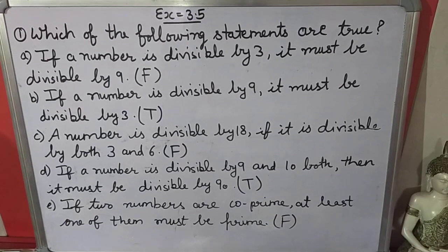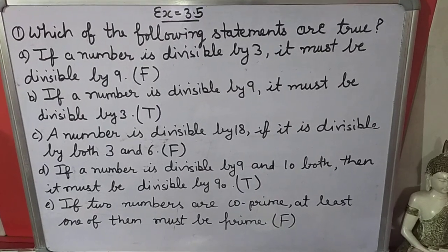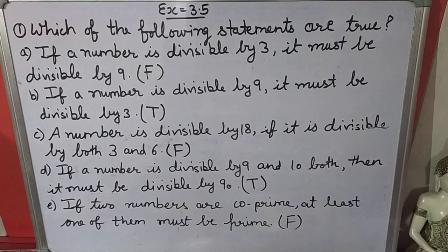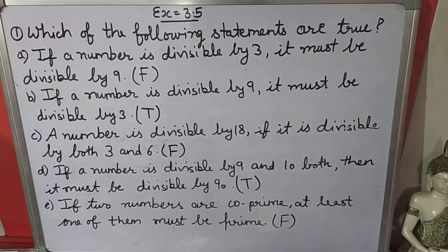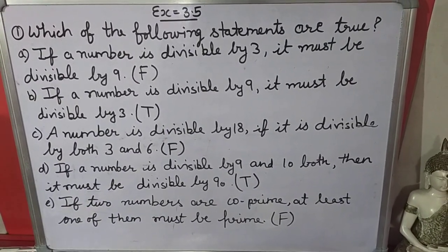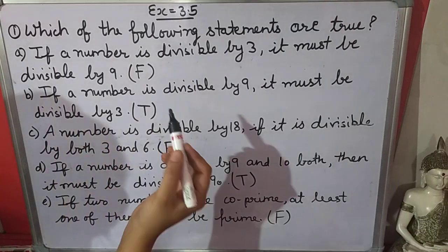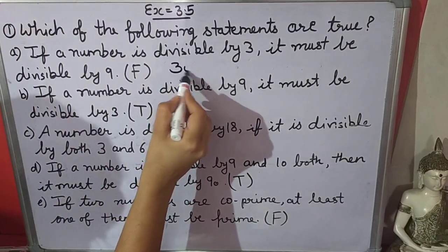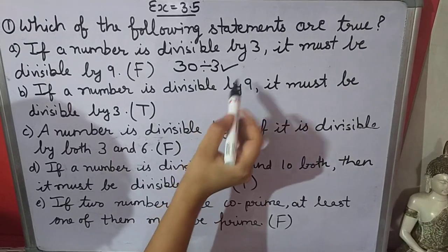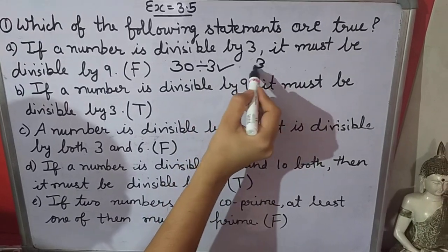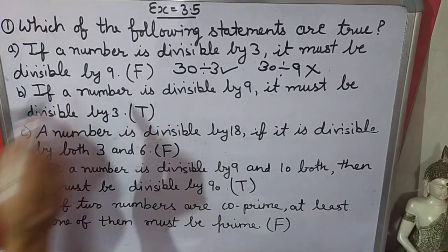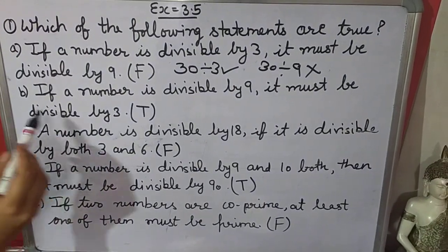First question: which of the following statements are true? First — if a number is divisible by 3, it must be divisible by 9. It is false. Here we will take one example. If we have 30, it is divisible by 3, but 30 is not divisible by 9. So it is false.